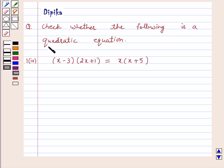Check whether the following is a quadratic equation: (x - 3)(2x + 1) = x(x + 5).